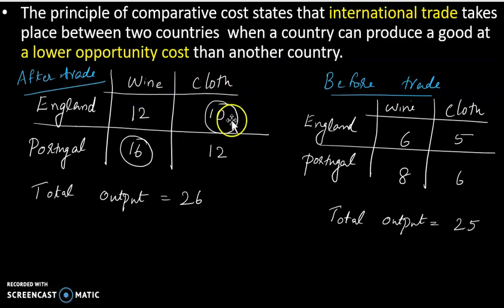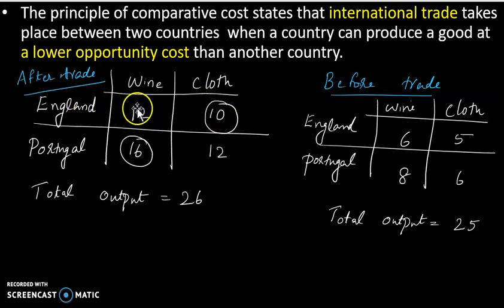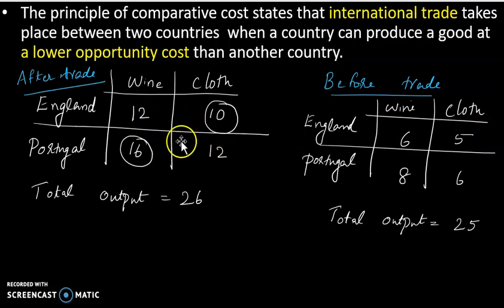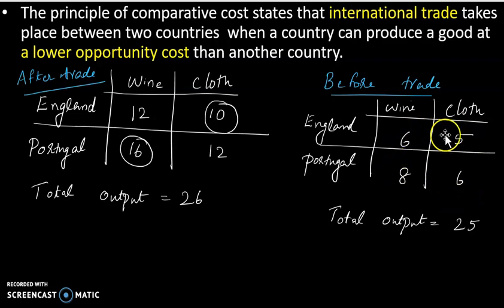Before trade, 12 units of wine and only 10 units of cloth are produced. The two producers produce: in England, wine is 6 and cloth is 5. In Portugal, wine is 8 and cloth is 6. In total, they produce 25 units of output.